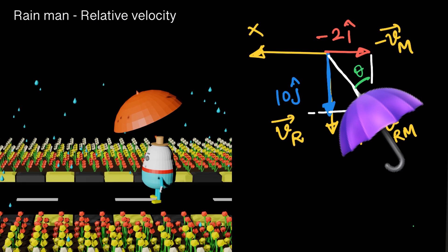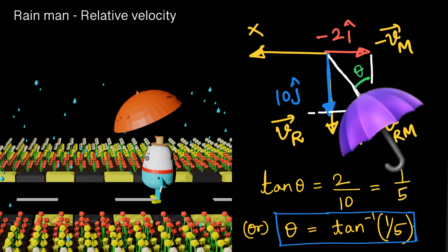He inclines the umbrella at angle theta with the vertical. In the right triangle formed by the velocity vectors, the magnitude of the vertical component is 10 and the horizontal component is 2. So tan(theta) equals perpendicular over base, which is 2 over 10, giving 1/5. Therefore theta equals tan⁻¹(1/5). He needs to incline his umbrella at an angle tan⁻¹(1/5) from the vertical so that he does not get wet, and that is exactly what you can observe in the clip.